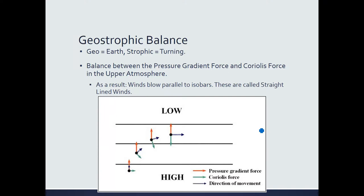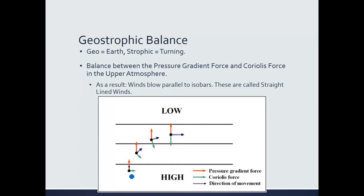Starting with a particle of air at rest, there is zero Coriolis force because the wind isn't moving. The moment it's released, it begins to accelerate toward the low pressure due to the pressure gradient force. As it accelerates, its speed gets faster and faster. As speed increases, the particle begins to turn to the right. Initially it starts at rest, accelerates towards low pressure, and as it does, the Coriolis force begins to steer it to the right.